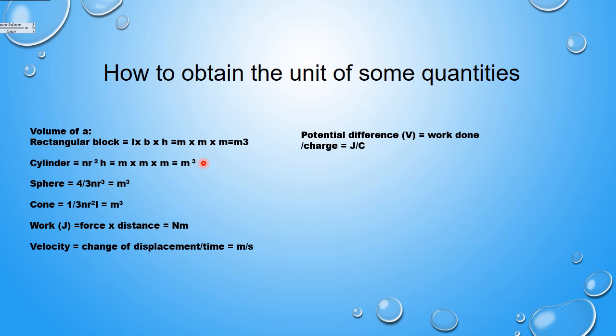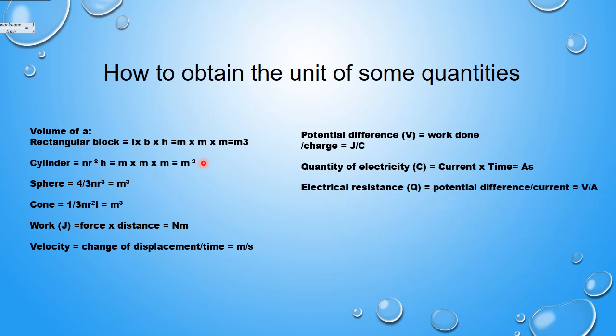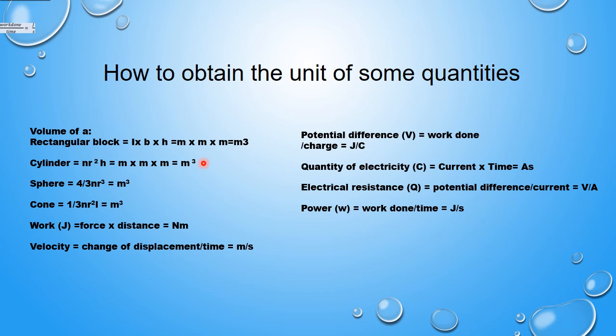Potential difference is work done per charge — joules per coulomb. Quantity of electricity is current multiplied by time — ampere-seconds. Electrical resistance is potential difference divided by current — volts per ampere. Power is work done divided by time — joules per second — and that is the unit for power.